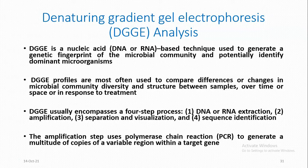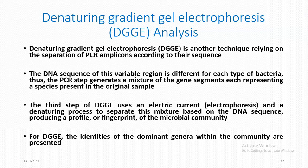The amplification step uses PCR (polymerase chain reaction) to generate multiple copies of a variable region within a target gene. DGGE relies on the separation of PCR amplicons according to their sequence. The DNA sequence of this variable region is different for each type of bacteria, so the PCR step generates a mixture of gene segments each representing a species present in the original sample. The third step uses electrophoresis and a denaturing process to separate this mixture based on DNA sequence, producing a profile or fingerprint of the microbial community.